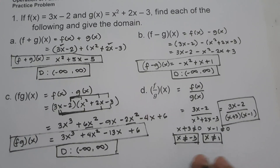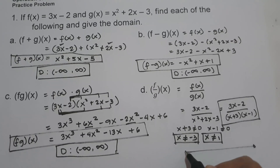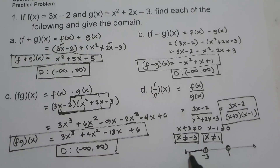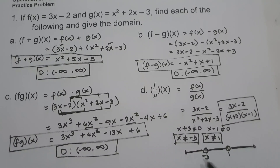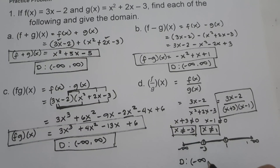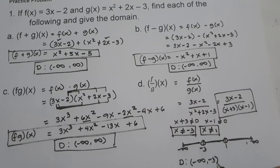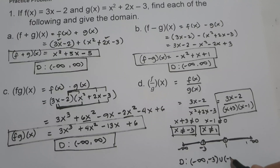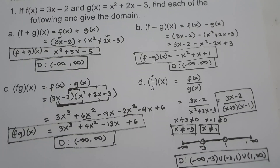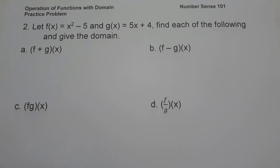On a number line, −3 and 1 are marked with open circles since they are excluded. The domain in interval notation is (−∞, −3) ∪ (−3, 1) ∪ (1, +∞).